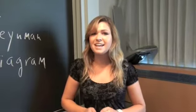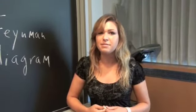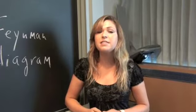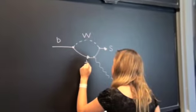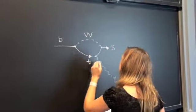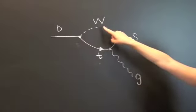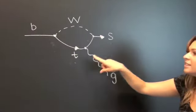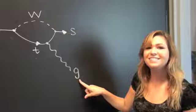That day, John Ellis had been working on a very difficult Feynman diagram, one involving the very heavy bottom quark: bottom quark, W boson, strange quark, top quark, gluon.